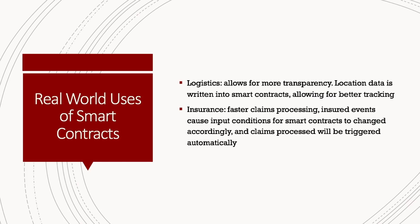Here are a couple of real-world uses of smart contracts. Logistics is one — we do so much today with shipping, receiving, and fulfilling items via e-commerce that the logistics aspect has become very important. Smart contracts allow for more transparency, as location data is written into them, enabling better tracking across multiple platforms. Another use is insurance. We rely so heavily on insurance — homeowners, healthcare, automobile, and more — and smart contracts allow for faster claims processing, as insured events cause input conditions to be changed accordingly.